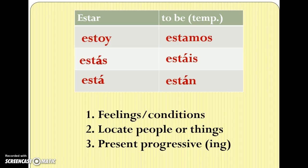The third reason to use estar is called present progressive — it's when you want to put something in an -ing form, like I'm talking, I'm walking, I'm learning, especially to emphasize the nowness or immediacy of the action. But this week, we're going to just focus on number one: feelings and conditions.